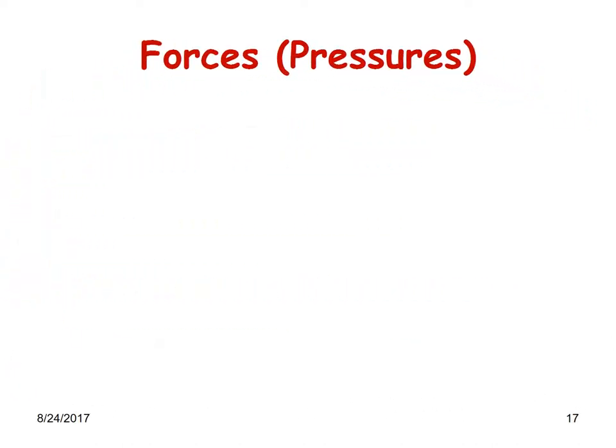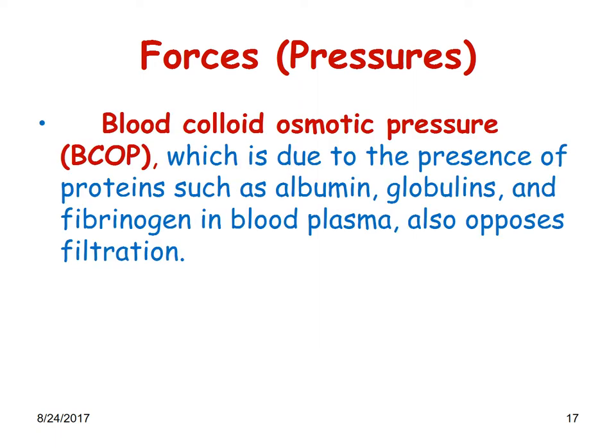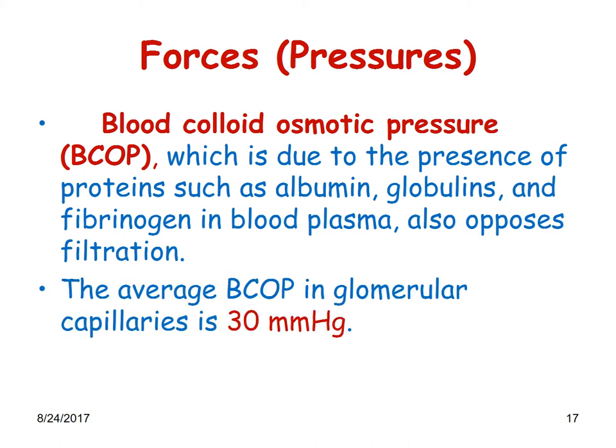The next force is called the blood colloidal osmotic pressure, or BCOP, which is due to the presence of proteins such as albumin, globulins, and fibrinogen in the blood plasma. These also oppose filtration, and the average colloidal osmotic pressure in the capillaries is around 30 millimeters of mercury.